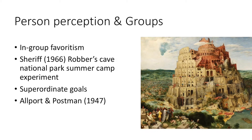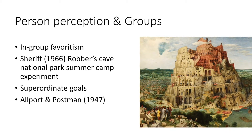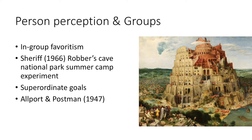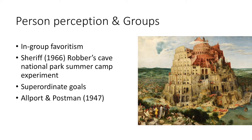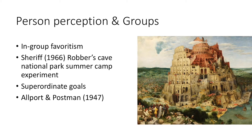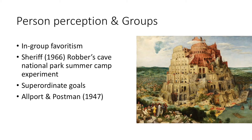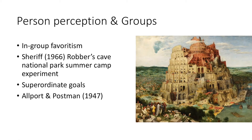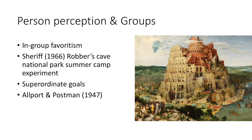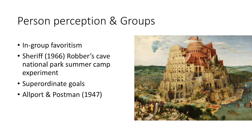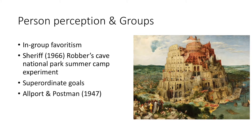Sherif in 1966, through the Robber's Cave National Park summer camp experiment, found that two isolated bunkhouses filled with boys separated into groups called the Eagles and the Rattlers competed and were very hostile toward each other. In order to stop the hostility, cooperation was required to move a stalled truck, and thus working together allowed individuals to overcome their in-group favoritism. Superordinate goals require cooperation, where a large goal is necessary for both groups to achieve, such as moving the truck.